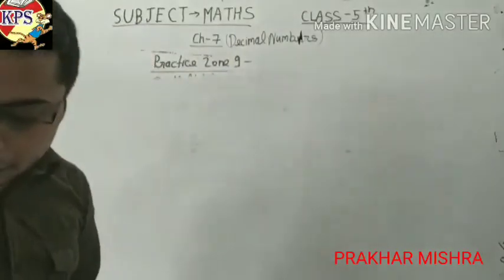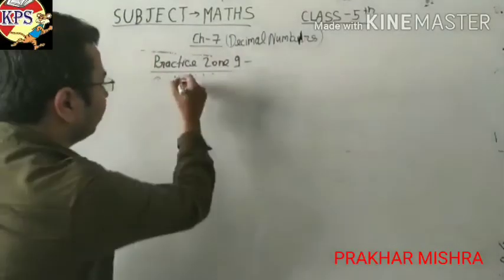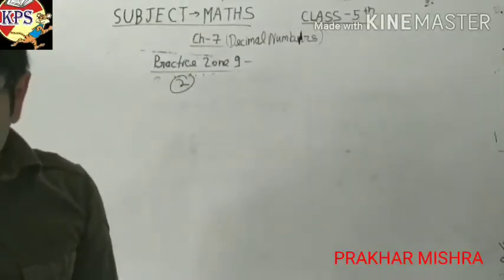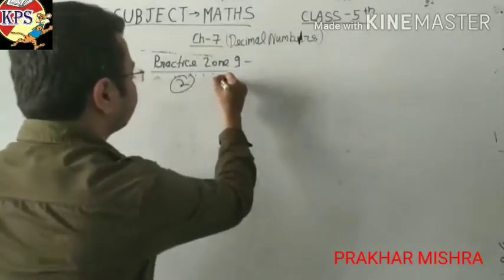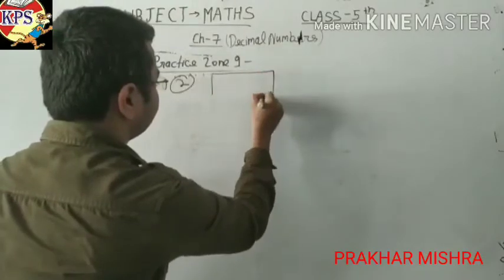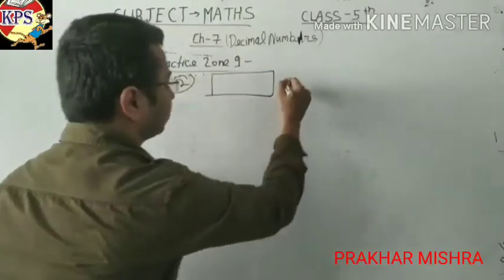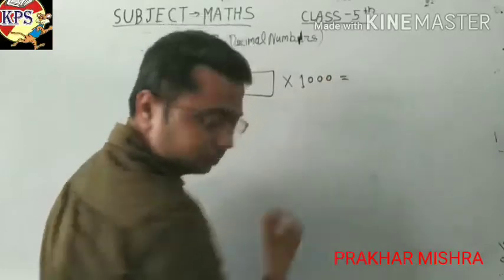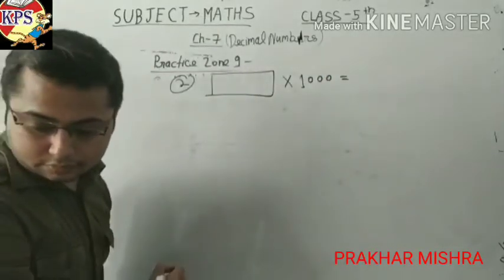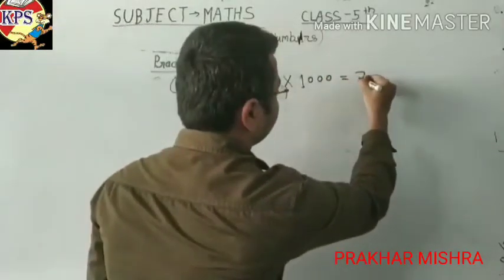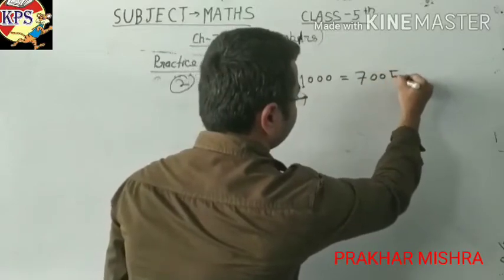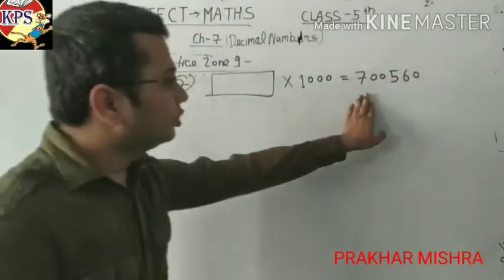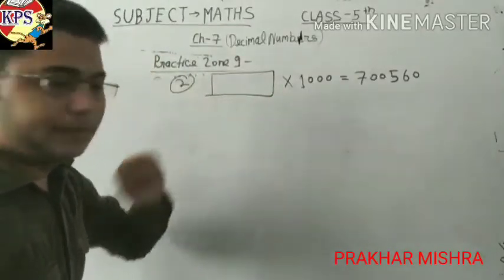In question number two, what is given? It is given: find the multiplier in the given quotient. This is the quotient and you have to find the multiplier.